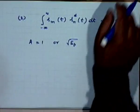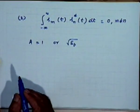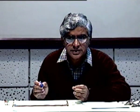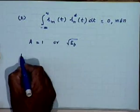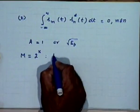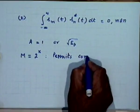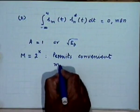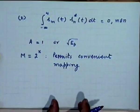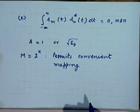For convenience in mapping binary sequences into waveforms, it is preferred to choose M as a power of 2, that is M = 2^k. This permits a convenient mapping where we take a block of k bits and decide, depending on the sequence, one of the M waveforms for transmission.